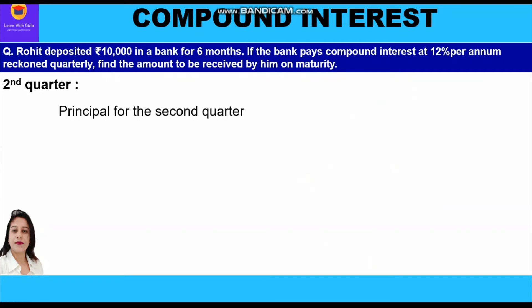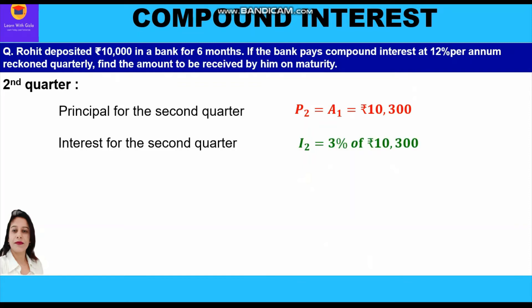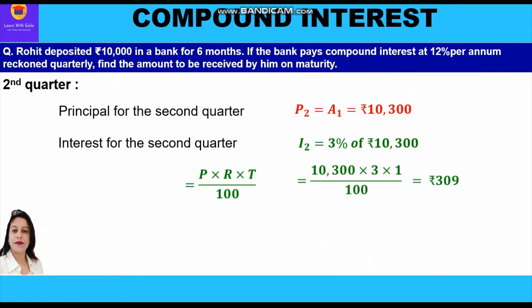The principal for the second quarter is rupees 10,300. Interest for the second quarter is calculated at 3% on this new principal using simple interest: P × R × T / 100 = 10,300 × 3 × 1 / 100, which equals rupees 309. So rupees 309 is the interest for the second quarter.